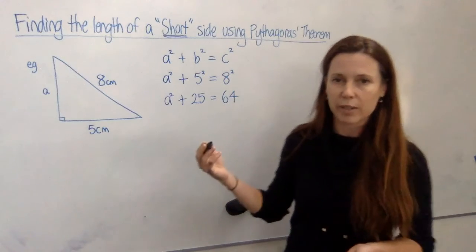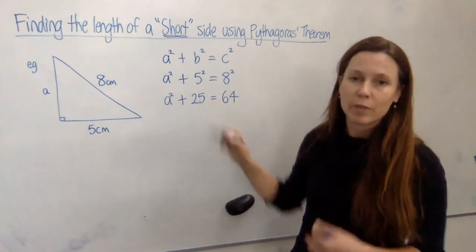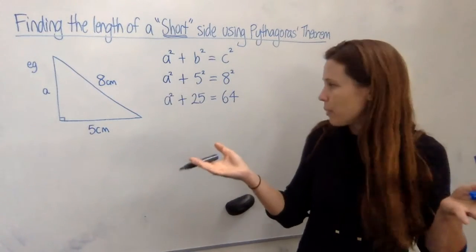So use your equation solving skills here and think: how do we undo this plus 25? We subtract 25 from both sides of the equation. Treat it like a seesaw and we have to keep it balanced.